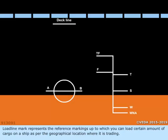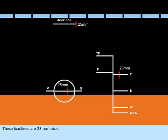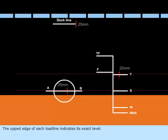These load lines are 25mm thick. They are painted in white or yellow on a dark background or in black on a light background. The upper edge of each load line indicates its exact level.